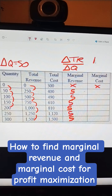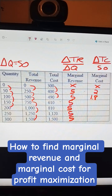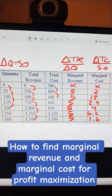Marginal cost is the change in total cost divided by 50, because that's the change in quantity. So this here would be 100 over 50, which is two. This is 90 over 50, which is 1.8. This is 120 over 50, which is 2.4. I'll just fill in the rest of these as I already did the calculation — 7.6.